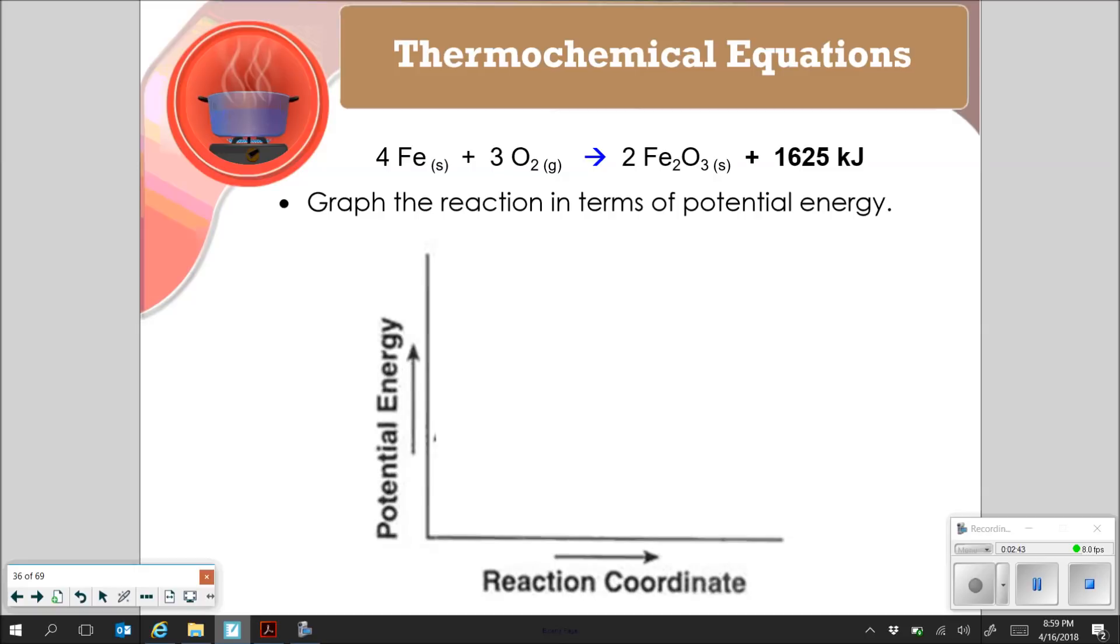So graph that reaction in terms of potential energy. If this is an exothermic reaction, it's going to look a little something like this. So over here, we've got my reactants, which is my iron and my oxygen. Over here, we have my product, which is my iron oxide. And the difference between these two potential energies should be 1625 kilojoules. That's lost, because it's exothermic.